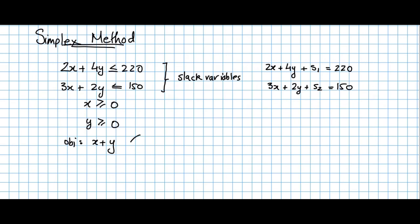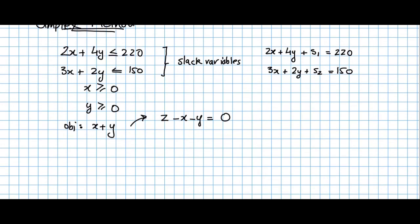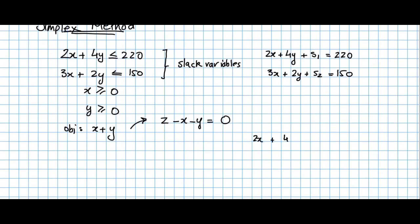If you look at the objective function, there is really no equality condition. So we can introduce a dummy variable z, which is not going to be part of our solution, but we can say that if we subtract the members of the objective function from z, we can get a quantity of 0. As a result, we can represent all of these equations in matrix format: 2x + 4y + s1 = 220, 3x + 2y + s2 = 150, and z − x − y = 0.